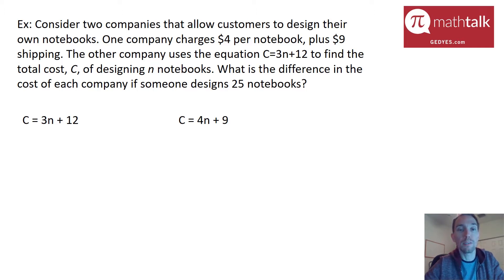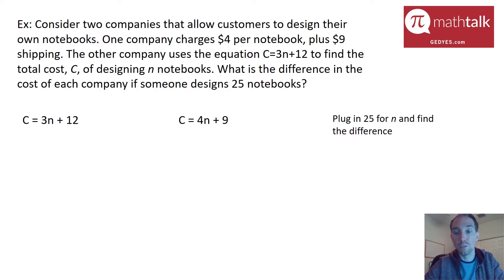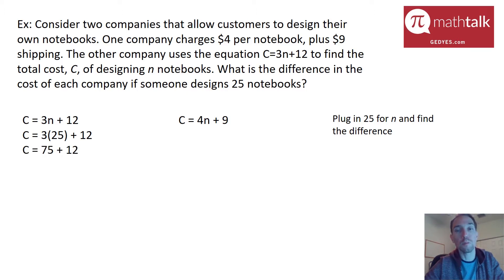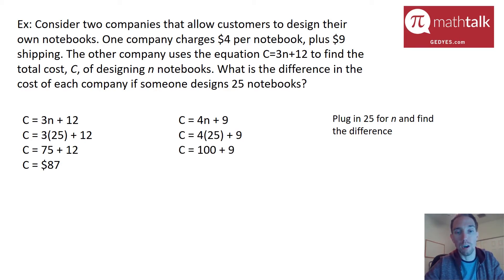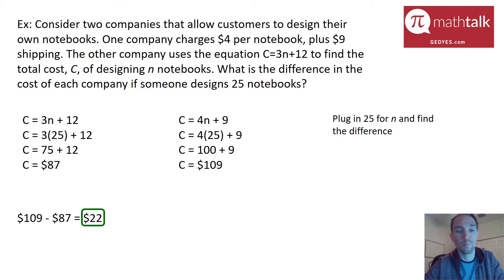They want us to find the difference for 25 notebooks, so we plug in 25 for N into each equation. For equation one: 3 times 25 plus 12 equals 75 plus 12, which is $87. For equation two: 4 times 25 is 100, add 9, and you get $109. Now we subtract the two and get $22 as the difference. That's our answer.